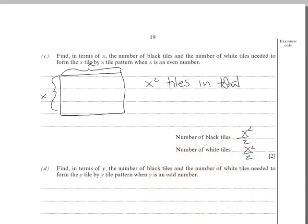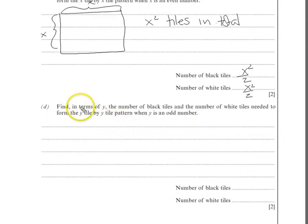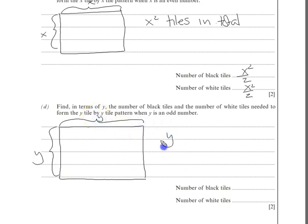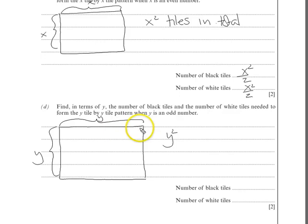Now for the odd case. Find in terms of y the number of black and white tiles for a y by y pattern when y is odd. We've got y rows and each row consists of y tiles, so again we have y squared tiles total. But each row is odd, and you have another row which is odd as well.